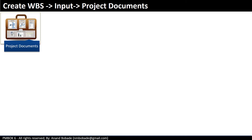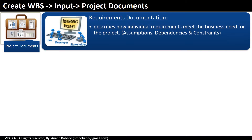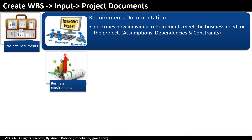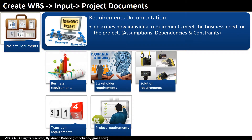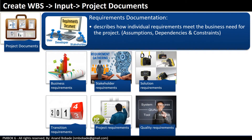Another important project document is requirements documentation, which describes how individual requirements meet the business needs for the project. These documents might include business requirement documents, stakeholder requirements, solution requirements, transition requirements, project requirements, quality requirements, etc. They also contain assumptions, dependencies and constraints. Requirements documents are helpful for understanding deliverables in detail, which helps in decomposing the deliverables.